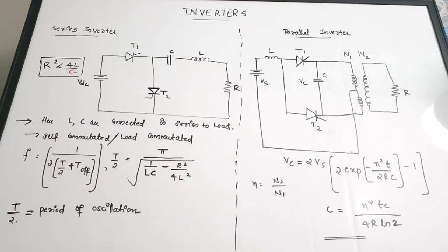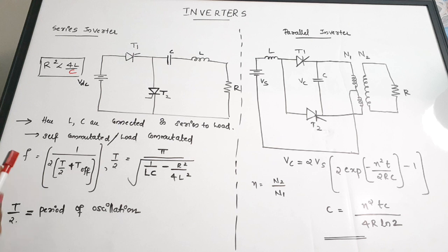The series inverter is also called a self-commutated or load-commutated type of inverter. We will be doing separate videos for series and parallel inverters in detail, but this is for quick revision.